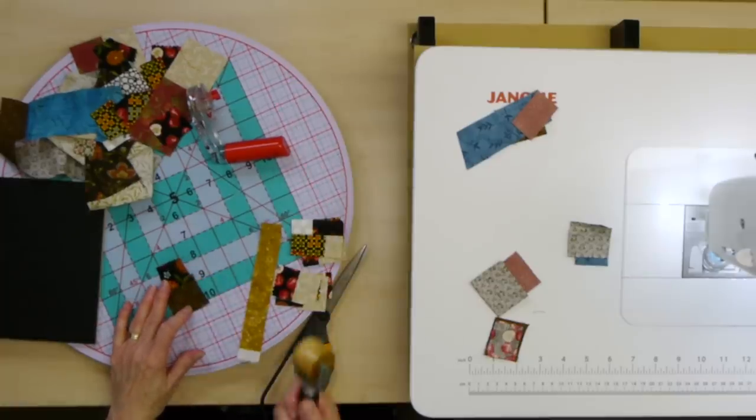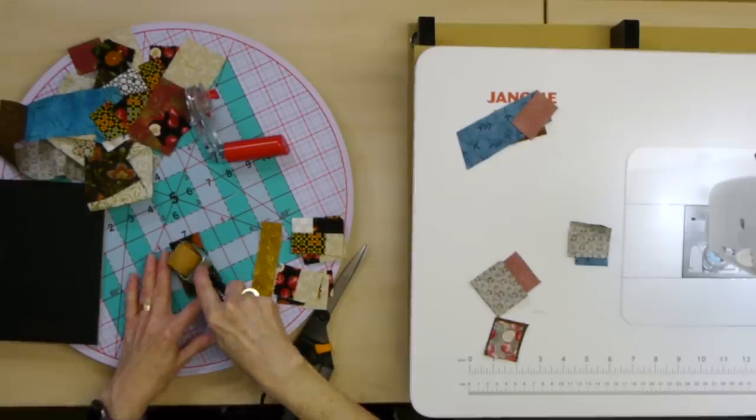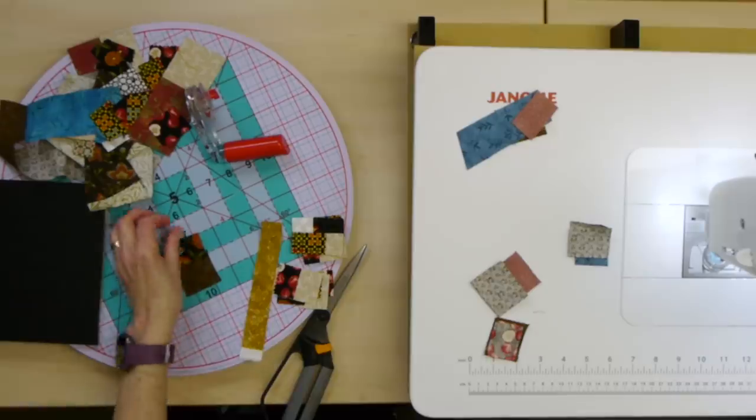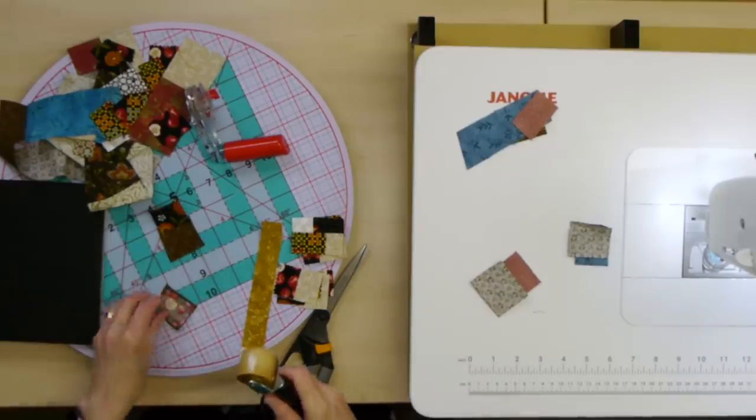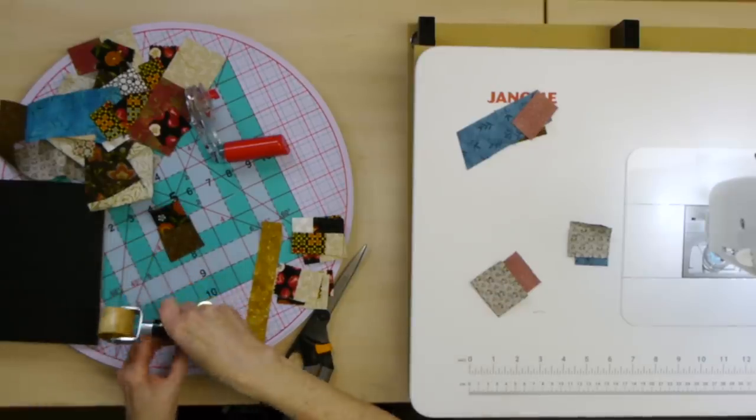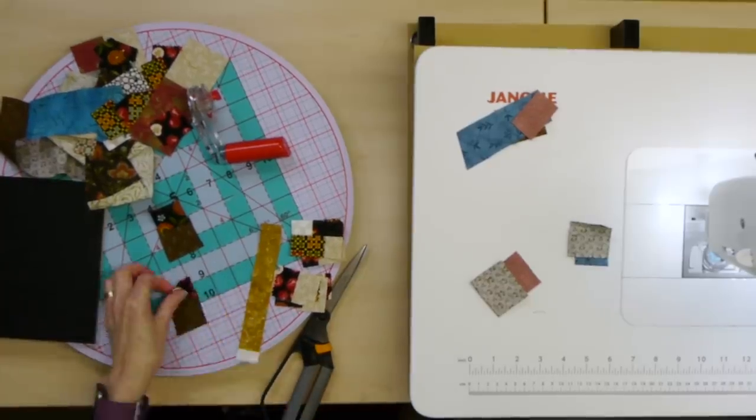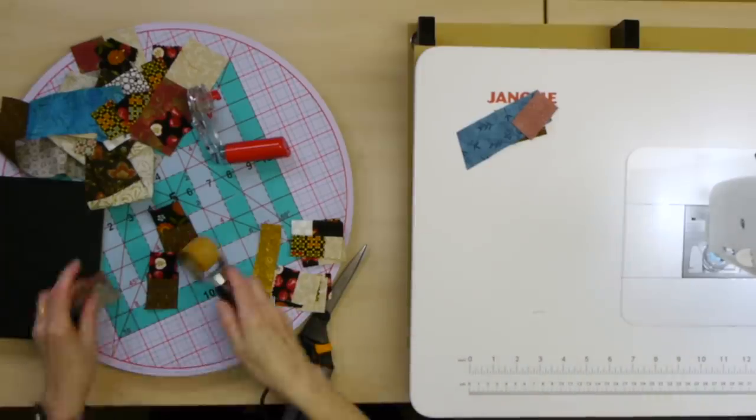And I can press these out. Now it doesn't really matter which way I press these. I can press it to the smaller piece, I can press it to the bigger piece. Doesn't matter. Usually I use a dry iron. Right now I'm just using the Violet Craft seam roller for demonstration purposes just to get that down. It works pretty well too. Okay, let's be consistent here and I'll press them away from that what was originally a strip. So I'm going to do that with all of my pieces here.